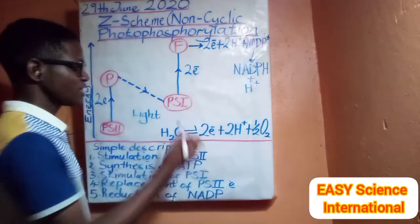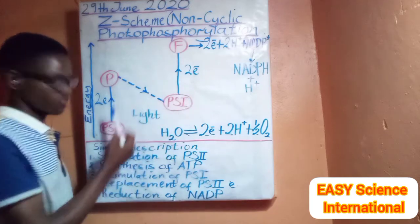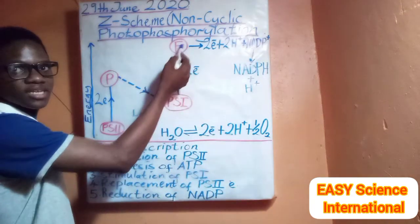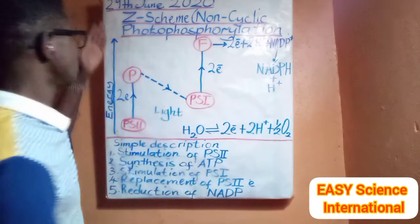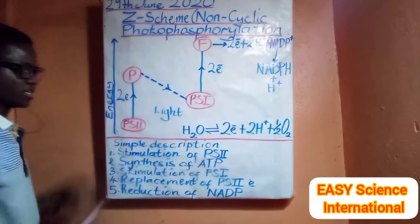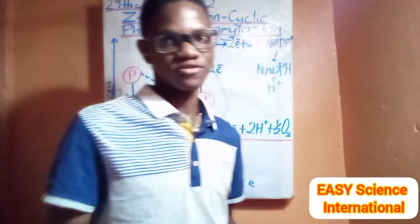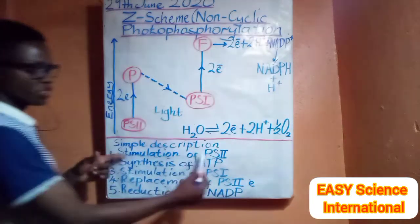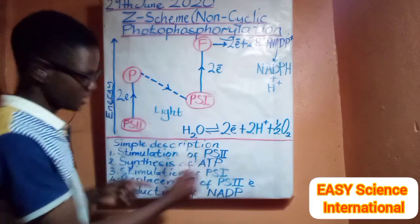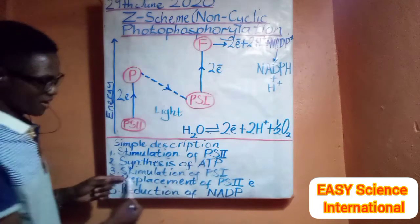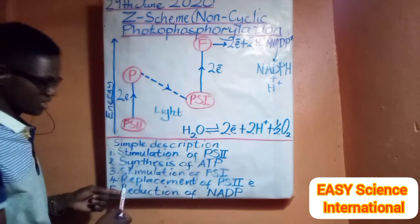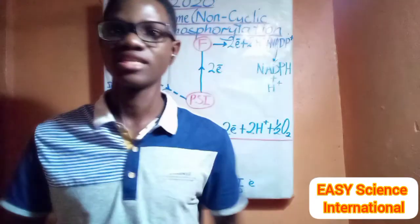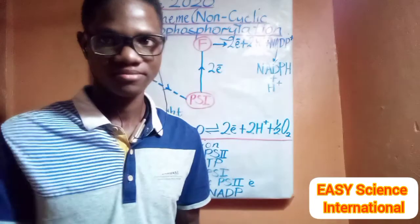Non-cyclic photophosphorylation involves two photosystems: Photosystem One and Photosystem Two. It also involves two electron acceptors — ferredoxin and plastoquinone. On our energy level diagram we have an increasing energy level axis. We summarized what happens in non-cyclic photophosphorylation into five major stages. These include: stimulation of Photosystem Two, synthesis of ATP, stimulation of Photosystem One, replenishment of Photosystem Two electrons, and the reduction of NADP. NADP is nicotinamide adenine dinucleotide phosphate.